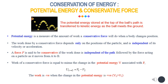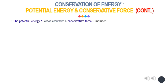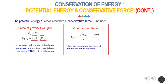The potential energy V associated with a conservative force F includes the potential energy with respect to the force of gravity. The potential energy of a body with respect to the force of gravity, denoted Vg, can be evaluated as W multiplied by y. The function Wy has been used to obtain the work done by W by subtracting the value of Vg corresponding to the second position from its value at the first position. This expression is valid only as long as we can assume the weight W of the body remains constant.